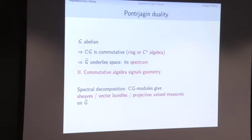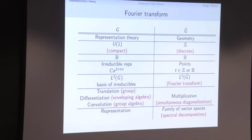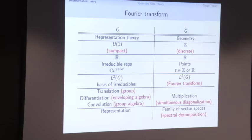Putting this all together gives an extremely successful example of representation theory: the Fourier transform. The general theme is that I have a group G and a space G-hat, and I'm going to take representation theory of G and translate it into geometry of G-hat. That's the Fourier transform in a nutshell.